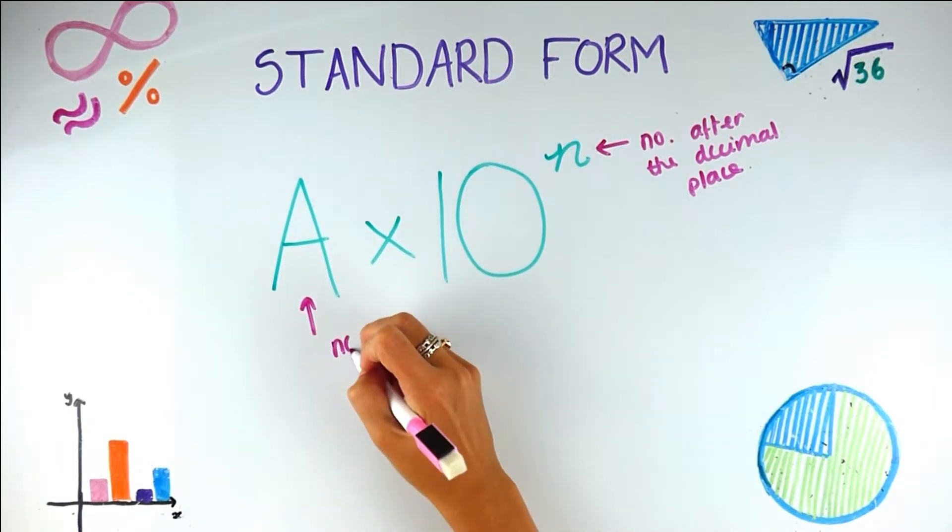Let's look at standard form for a number we know well: one thousand. A thousand isn't in the form a × 10^n yet, so I need to get it there. a has to be between one and ten, so I'm going to pick one. Now one can be written as 1.0, 1.00, 1.000 — they're all still exactly one. But I wanted a thousand, so I move the decimal point: one, two, three places to the right. The number after the decimal place — n — is three. So 1000 = 1 × 10^3.